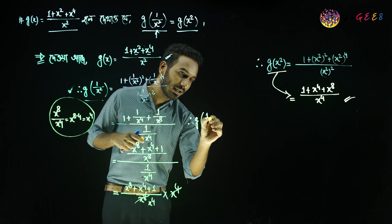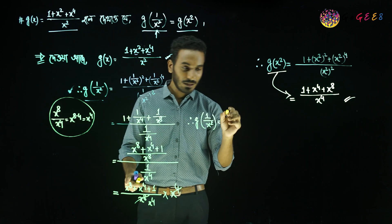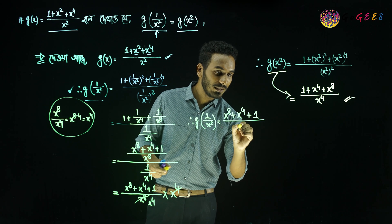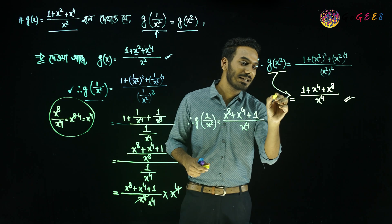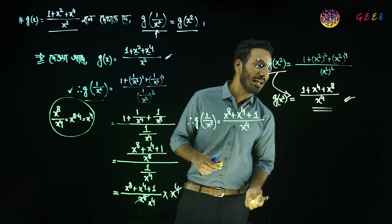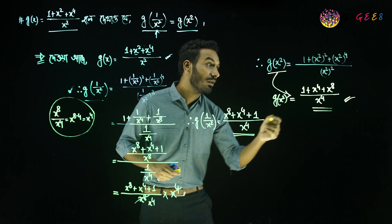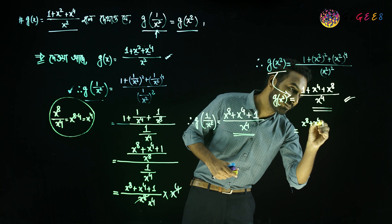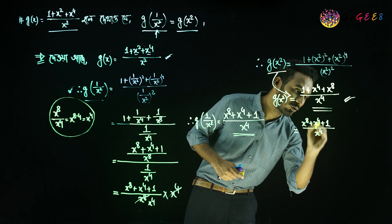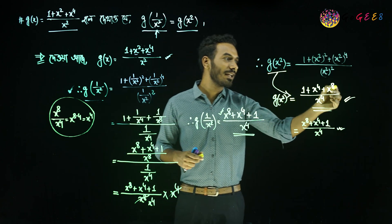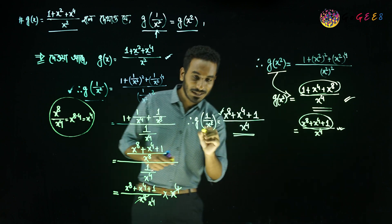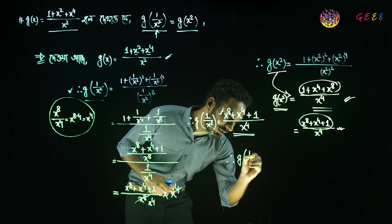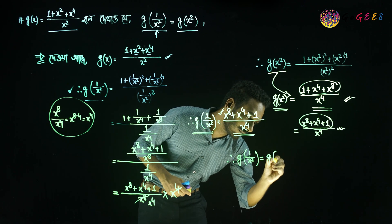So g of x square means substituting x square in place of x: 1 plus x to the power 4 plus x to the power 8, which can also be written as x to the power 8 plus x to the power 4 plus 1 divided by x to the power 4. This is the same expression. So we have shown that g of 1 by x square equals g of x square.